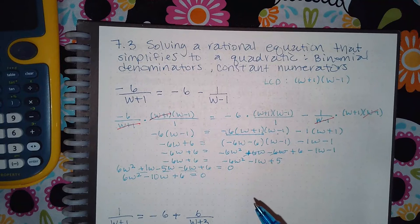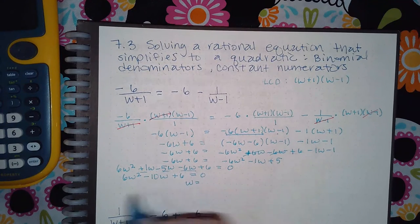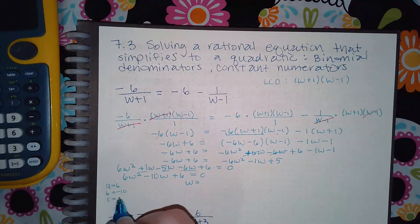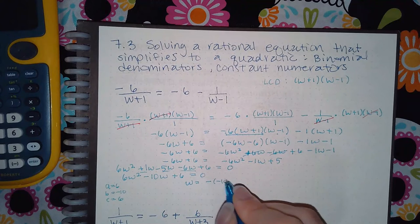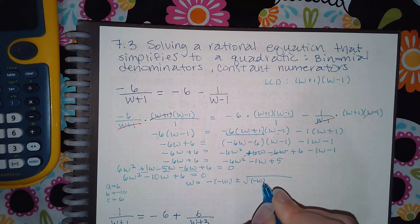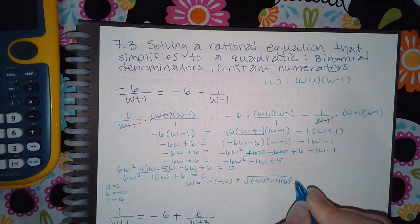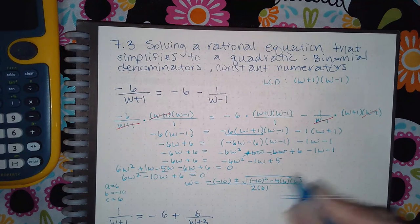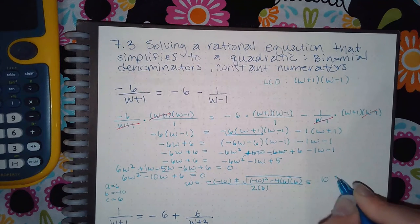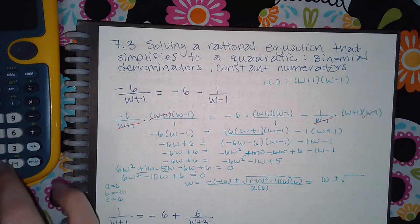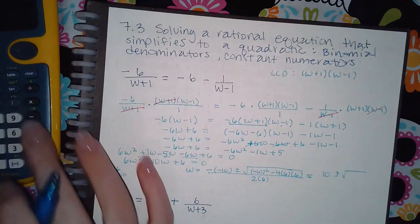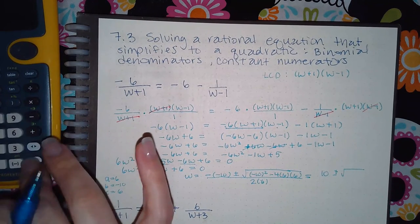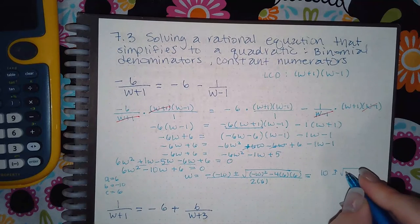And so if I use my quadratic formula, I get w equals—let's see—a will be 6, b will be negative 10, and c will be positive 6. So negative b plus or minus b squared minus 4ac all over 2a. So this will turn into positive 10 plus or minus the square root of negative 4 times 10 times 6. Negative 140.